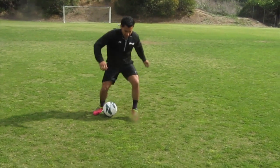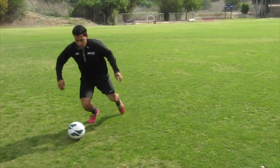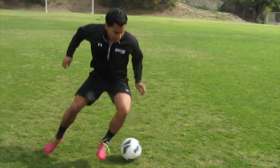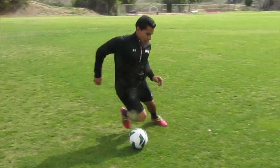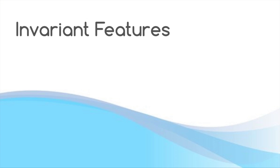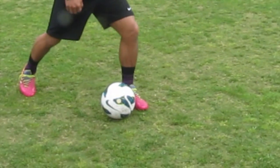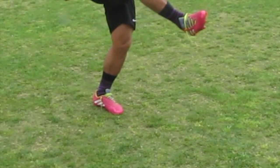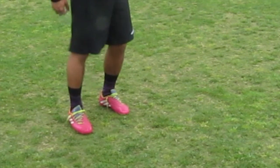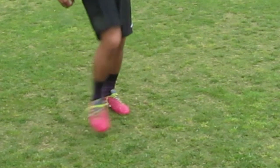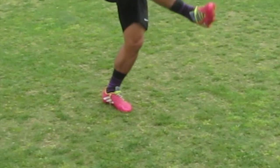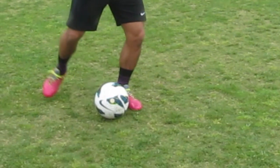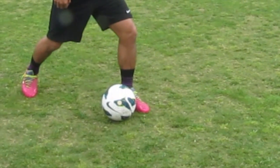We will examine the act of passing a soccer ball as an example of a generalized motor program. There are underlying features that cannot be changed, which are called invariant features. The first invariant feature is the sequence of actions. Here George plants his left foot near the ball, swings with his right foot, contacts the ball, and follows through to plant his right foot. This is an invariant feature because if the sequence of actions is reversed, the actions in the opposite order do not constitute a pass.